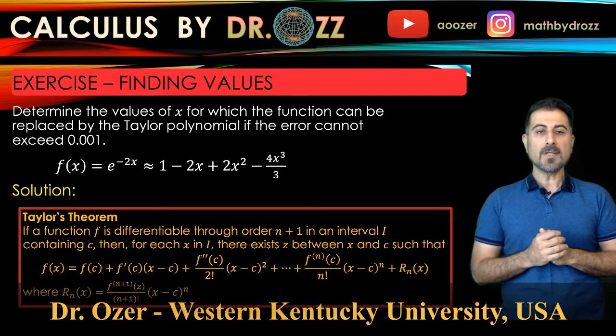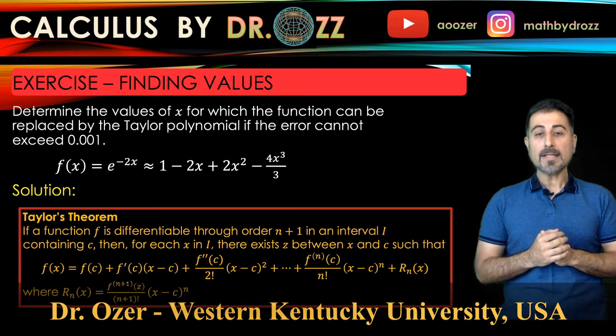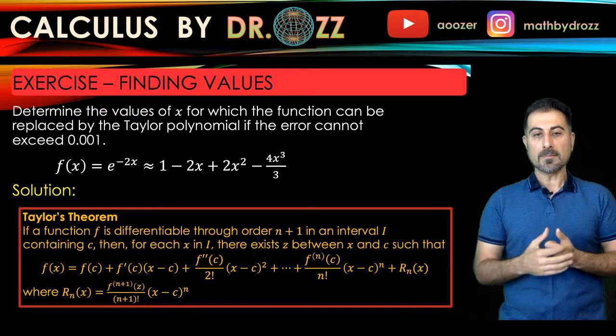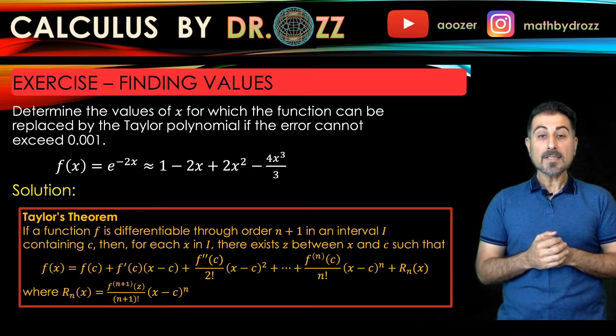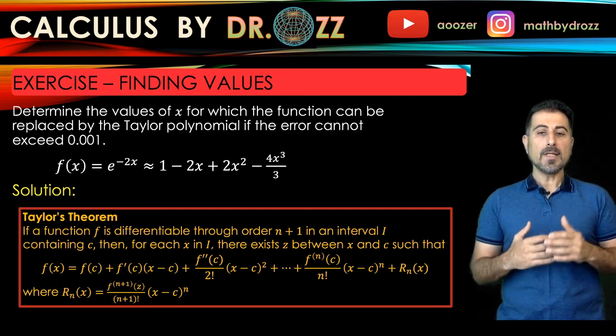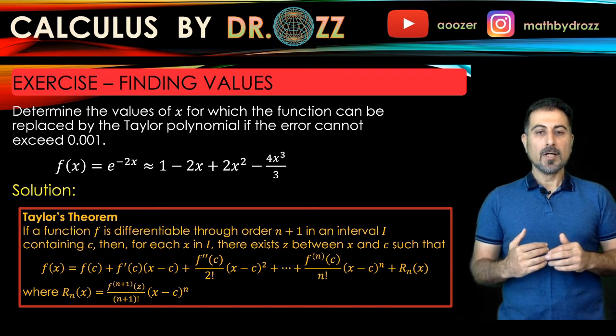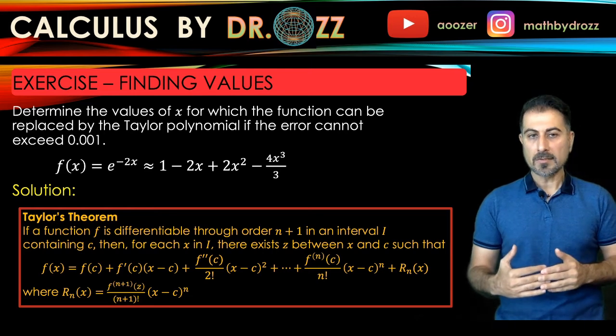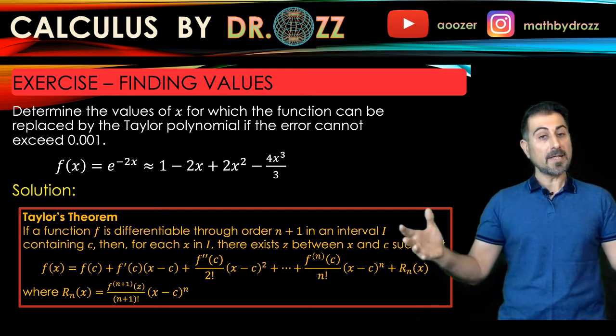So specifically speaking, we have the function e to the minus 2x, which is approximated by the Maclaurin expansion of order 3, we have P3 of x. So now the question is that for what x values this expansion is good enough to make an error not more than 10 to the minus 3.